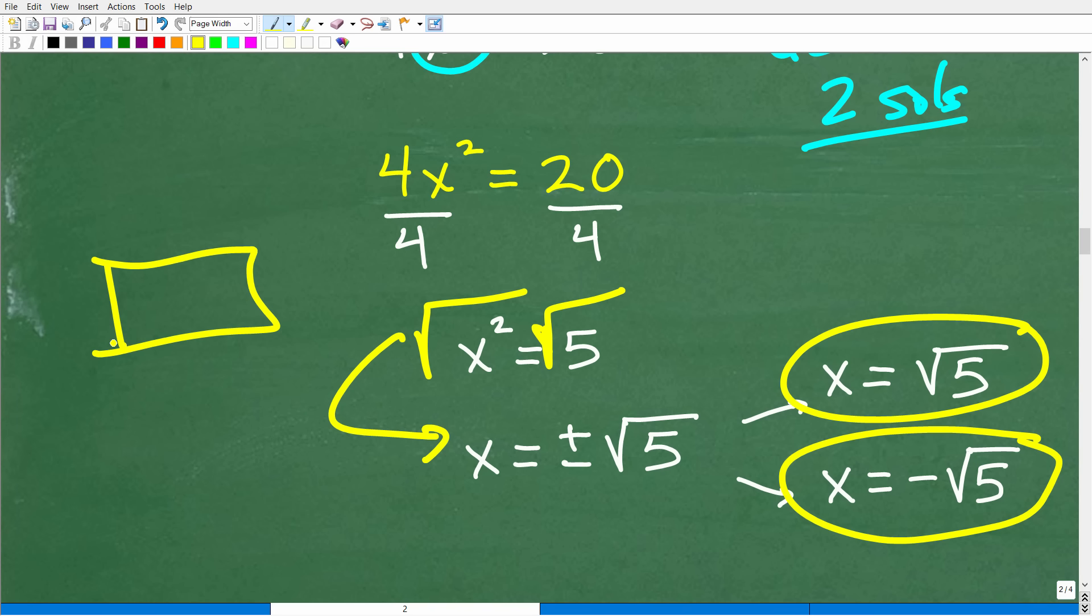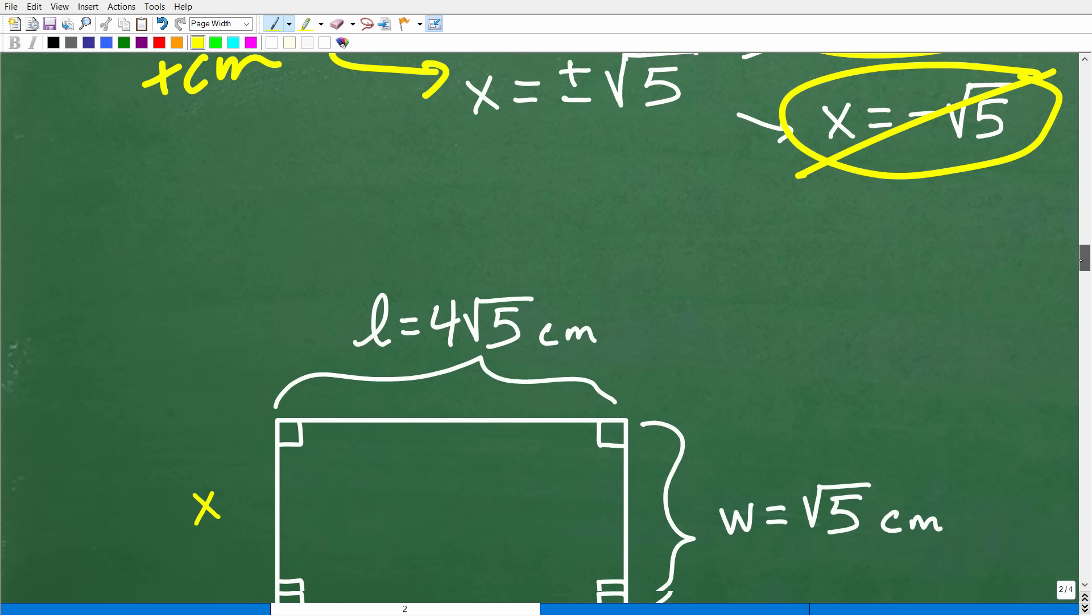Now, because we're dealing with an actual object here, a rectangle with actual measurements, we're going to throw out this negative value. So we're not going to be dealing with negative centimeters. We're going to be dealing with positive centimeters. So we'll keep this as our answer. So X is equal to the square root of 5 is the correct answer. Okay, but what does that represent?